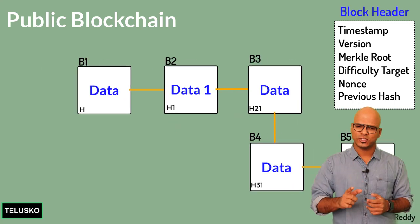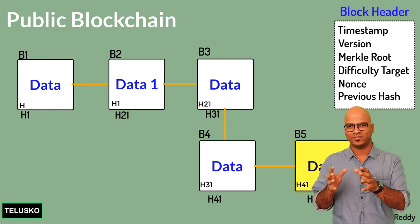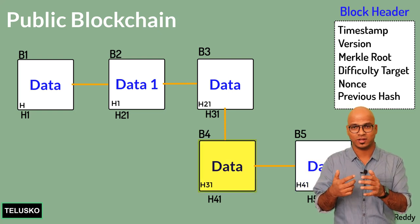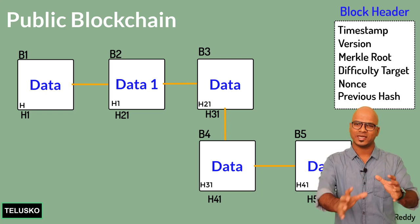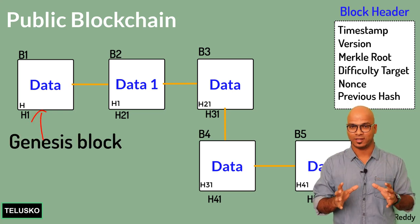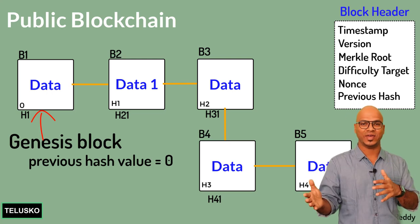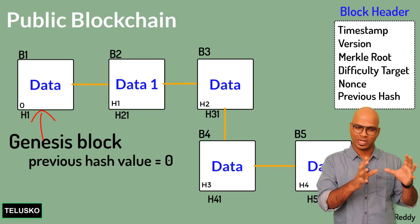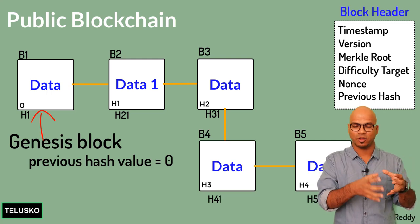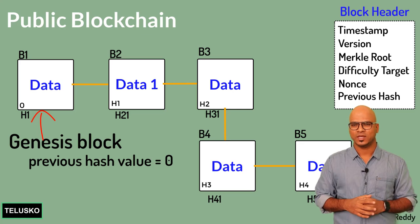One last question: every block has the hash of the previous block, but what about the very first block? The first block is called the genesis block, and its previous hash value is zero since there is no block before it. In the case of Bitcoin, the genesis block was created by Satoshi Nakamoto, and all subsequent blocks are built on top of it.